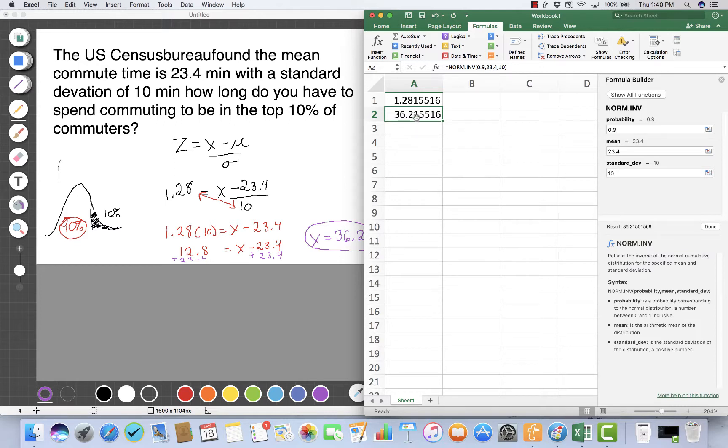The result has slightly more decimal places because Excel carried forward all decimal places in the Z score instead of rounding to two. You have a choice: use norm.s.inv and solve for the Z value using the formula, or jump right to norm.inv with your mean and standard deviation to get your X value directly.